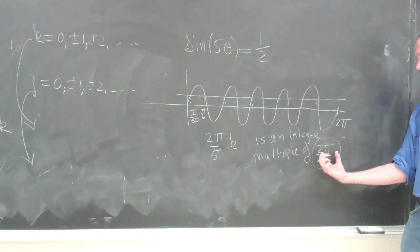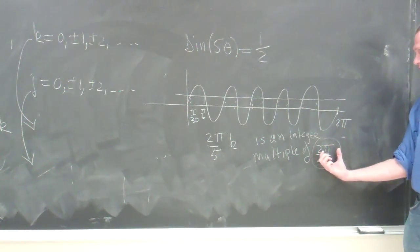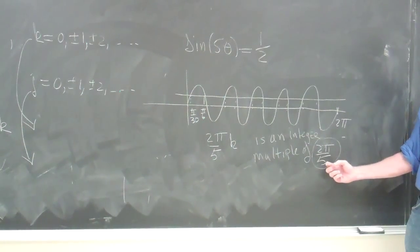You can think about it like an apple, so it's going to be 1 apple, 2 apples, 3 apples. It's an integer multiple of this quantity, 2 pi over 5.